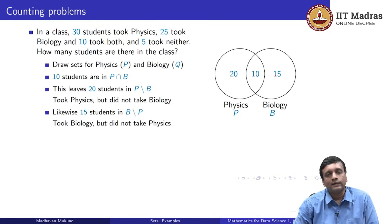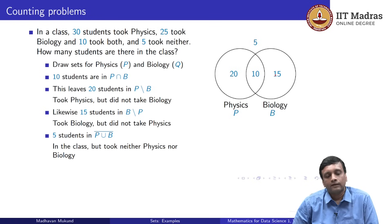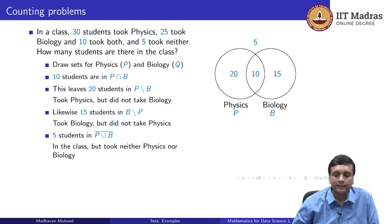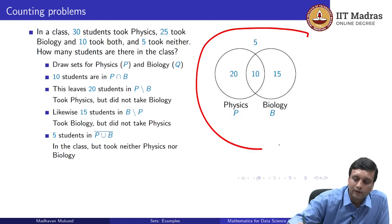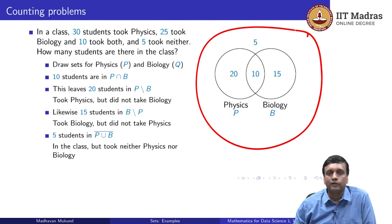In this way, we can populate the three regions of the Venn diagram with numbers indicating how many students are in each of these regions. At 10 in the intersection, 20 on the left-hand side, 15 on the right-hand side. But this is not the entire class because with respect to the entire class, we have to take the number who are in the complement, those who have taken neither physics nor biology. And these are five students who are outside P union B. Technically, one should draw outside this, the complement to indicate the entire class, but just for convenience, I have not done that. But this entire complement outside this contains five elements.